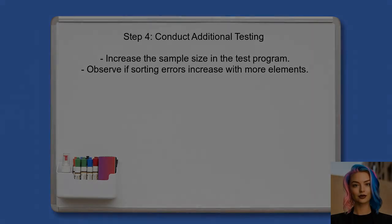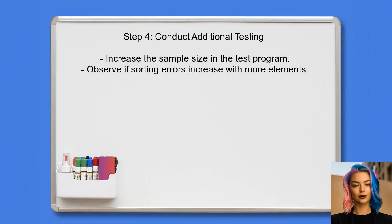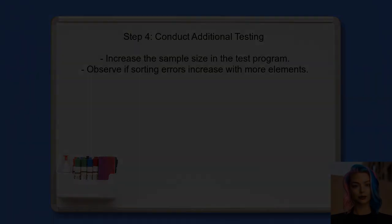Finally, the user can run additional tests with larger sample sizes. This will help identify if the sorting errors persist, and if they correlate with the number of elements in the queue.